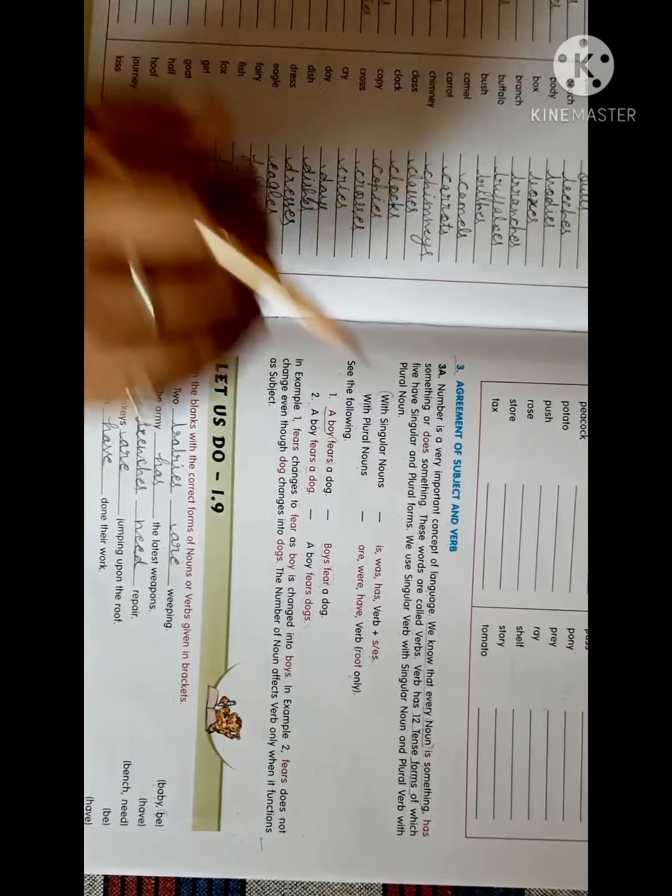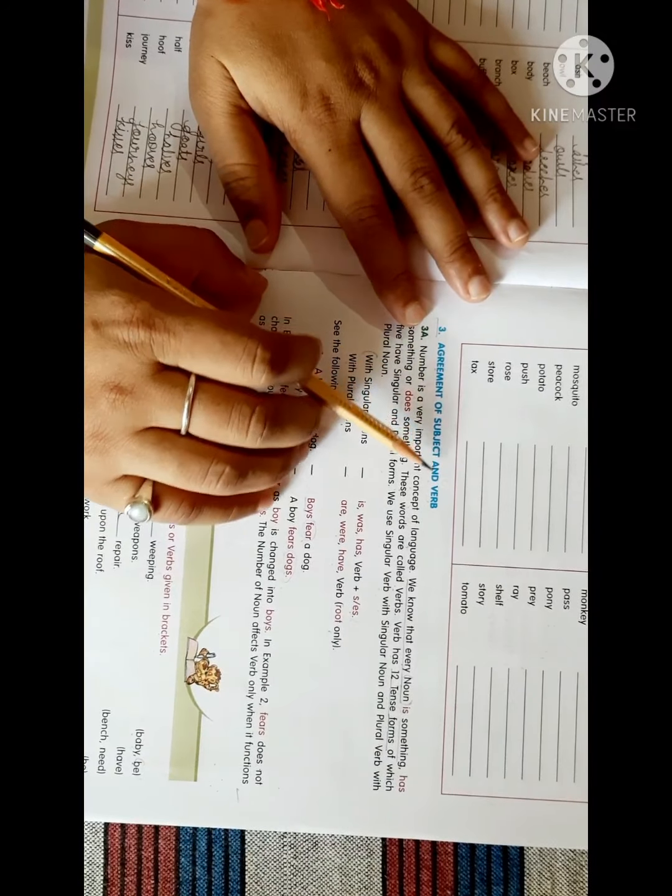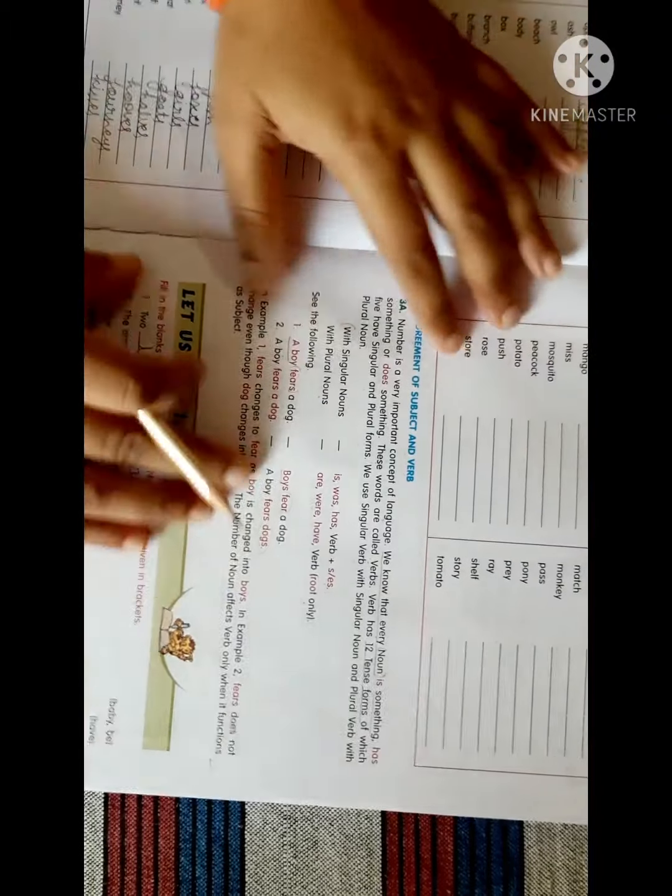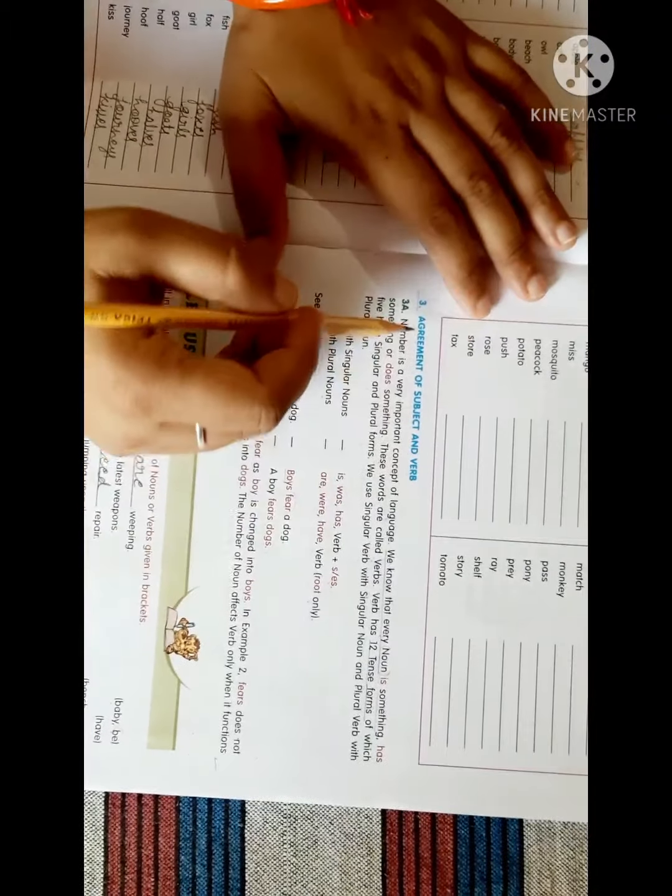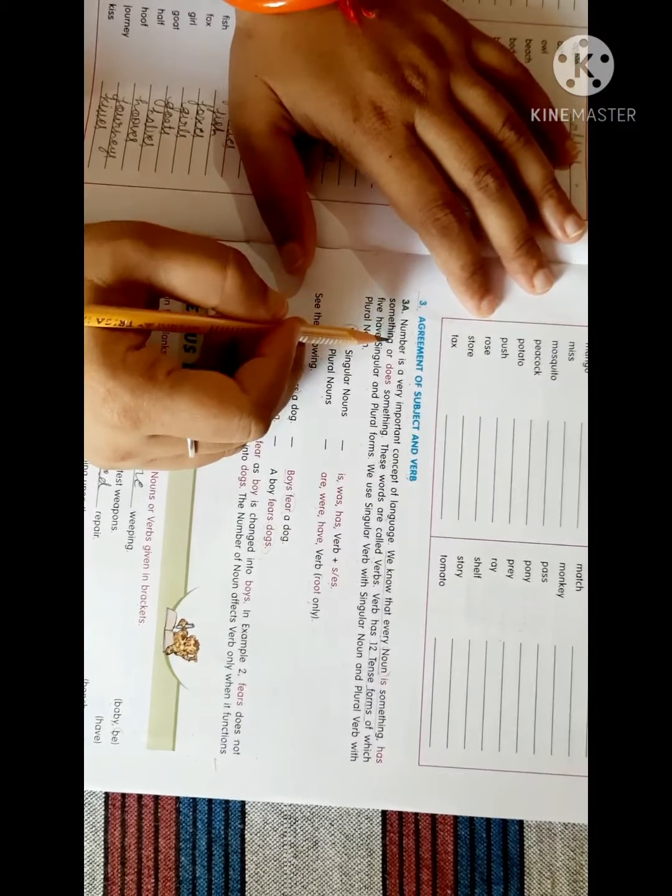Now, come to the next. This is your third part from the chapter: Agreement of subject and verb. So we will study today about agreement of subject and verb. Now come to the rules.